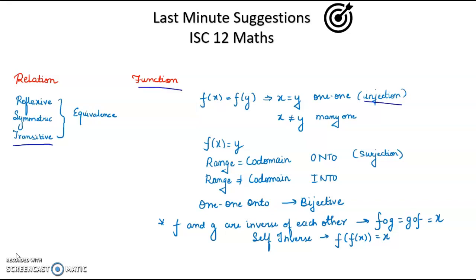Now in functions, you must be aware about one-one, many-one, onto, and into. I'll just give you a glance of this. This is the condition for one-one function: f(x) = f(y). If x = y, then it is a one-one function, also known as injection. If these terms are not equal, like x ≠ y, then it is a many-one function.